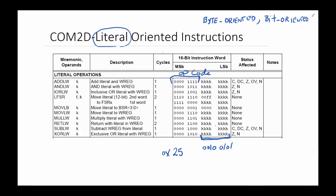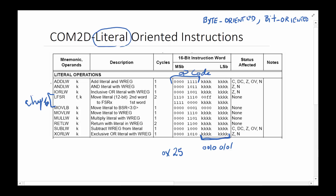Since there aren't that many literal-oriented instructions, I'd like to take this opportunity to show how to get more detail about an instruction. One instruction worth noting is the LFSR instruction, which is for indirect addressing — we'll leave that until much later in the Chapter 6 presentations, where we really get into what indirect addressing is and how you deal with it.